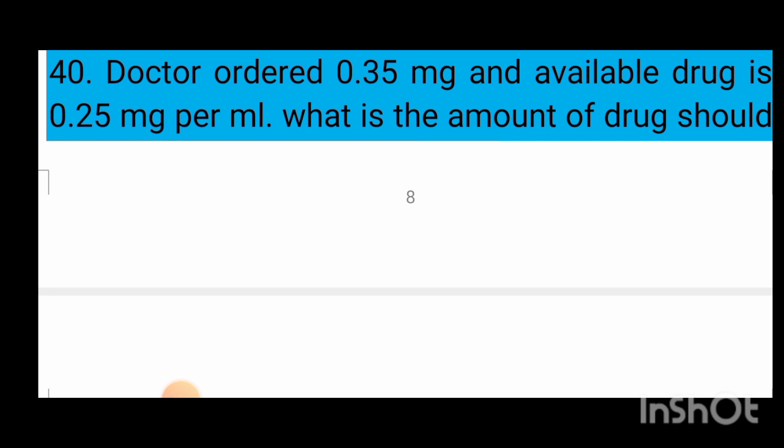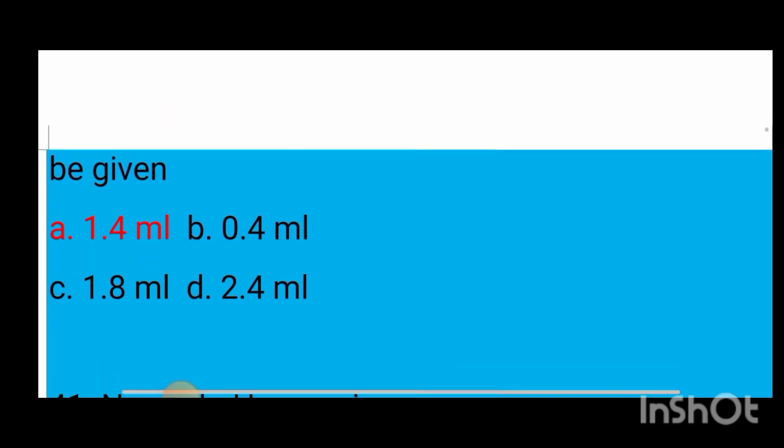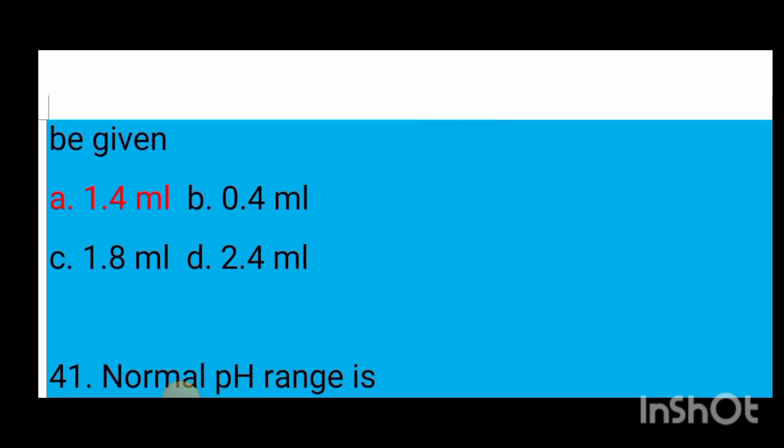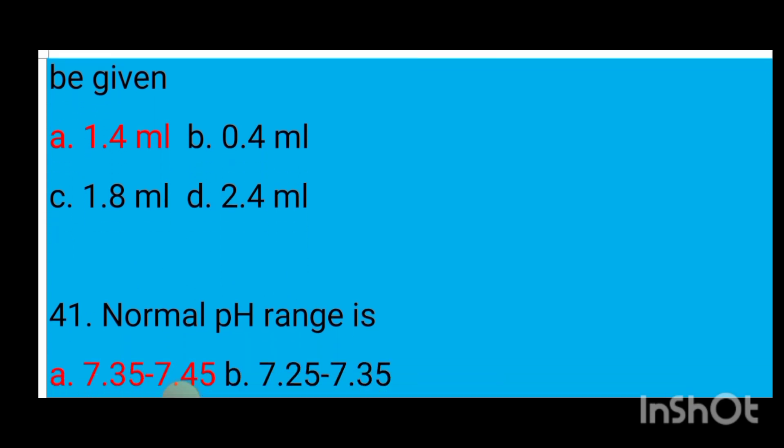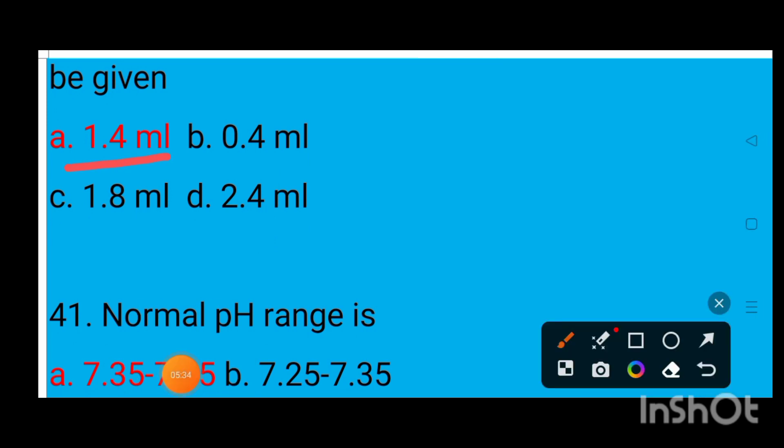Question number 40: Doctor orders 0.35 mg; available drug is 0.25 mg per ml. What is the amount of drug that should be given? Option A 1.4 ml, option B 0.4 ml, option C 1.8 ml, option D 2.4 ml. The correct answer is option A — 1.4 ml.